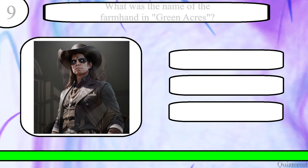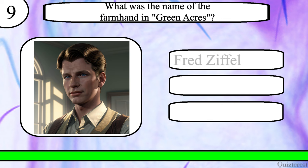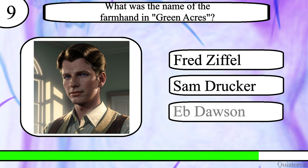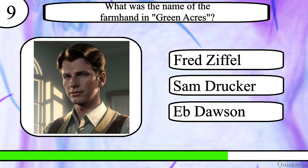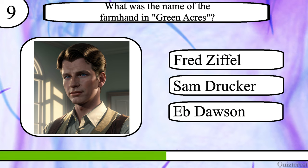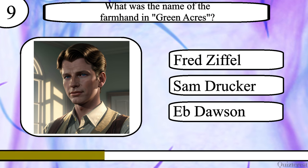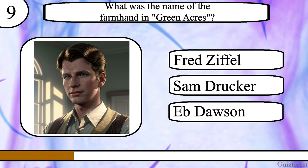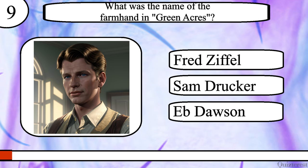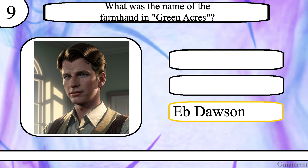Question 9. What was the name of the farmhand in Green Acres? Fred Ziffel, Sam Drucker or Eb Dawson? The correct answer is Eb Dawson.